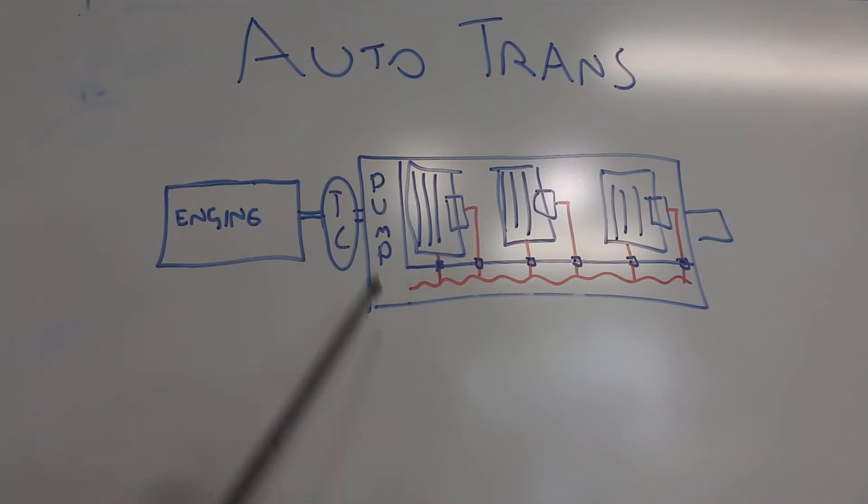It has that same fluid lubricating all the rotating parts and being pressurized into things like clutches to lock components of the automatic transmission up. So let's keep that in mind, and now let's go and look at how an AYC diff works.